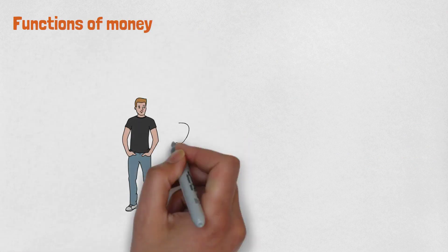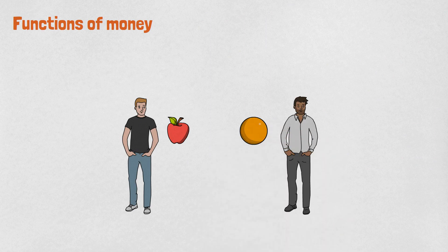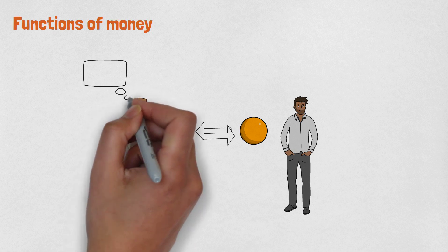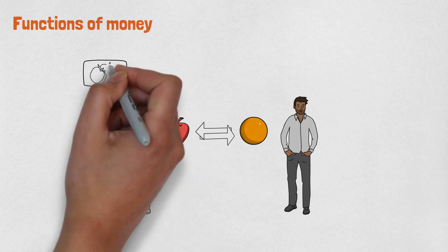If one person has an apple and another person has an orange, they can make a trade. But what if the person who has an apple doesn't want an orange? Maybe he wants a tomato.